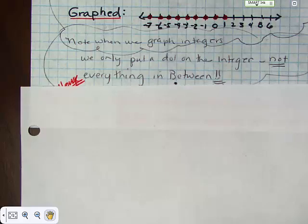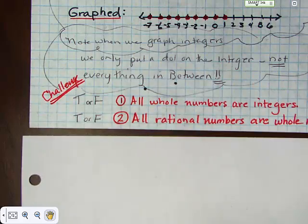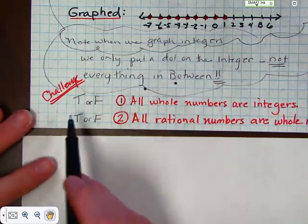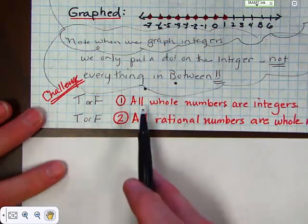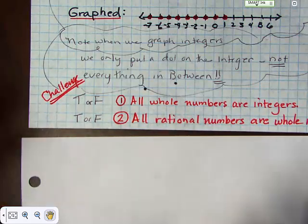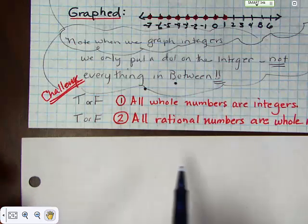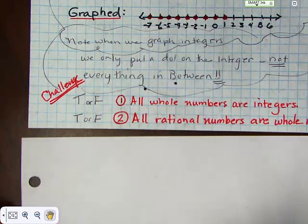Here are a couple of challenge questions — please write them in your notes and answer them. True or false: all whole numbers are integers. True or false — look at the chart. True or false: all rational numbers are whole numbers. True or false — look at the chart.